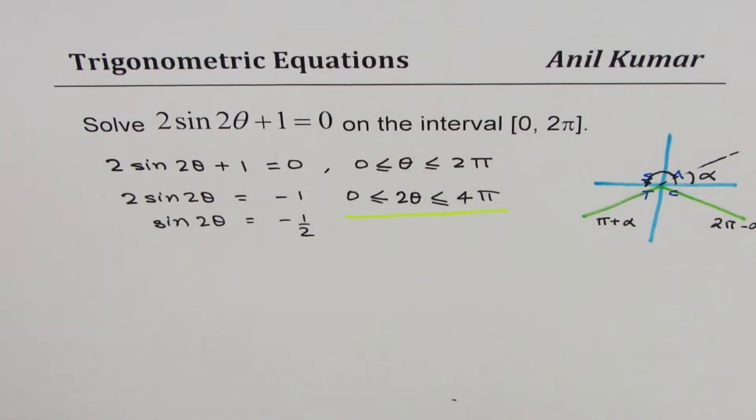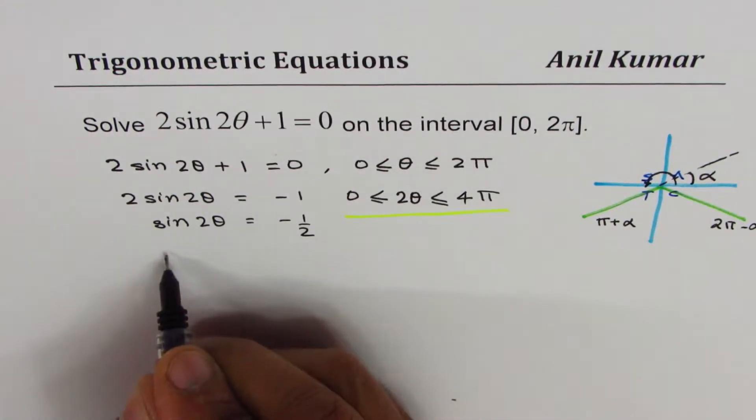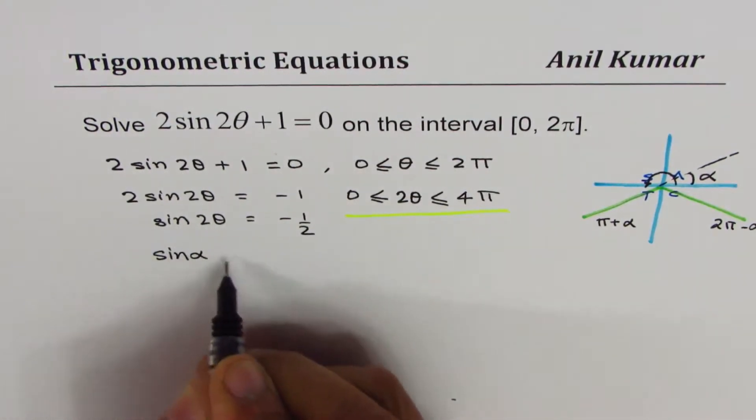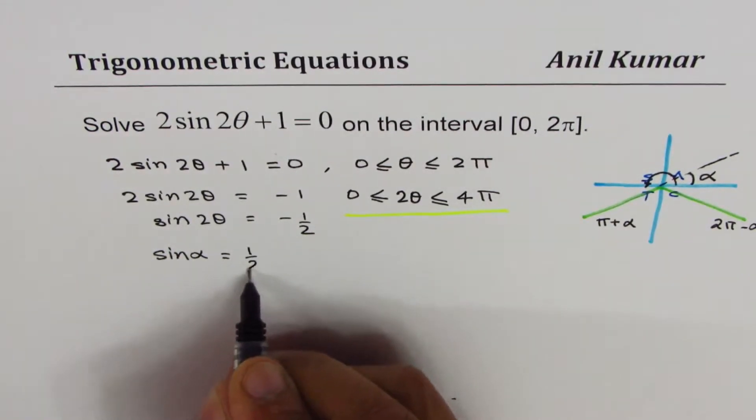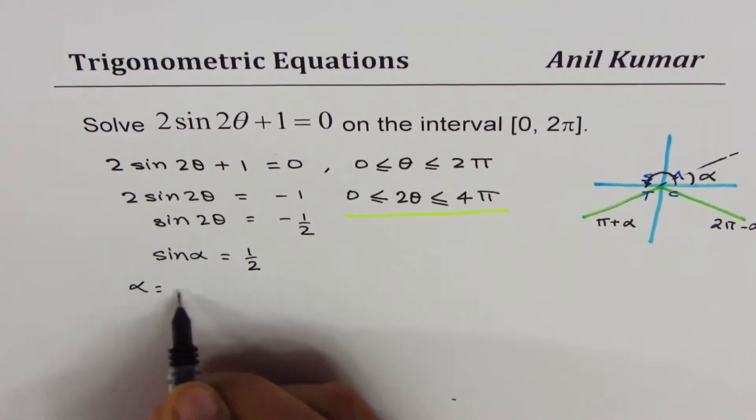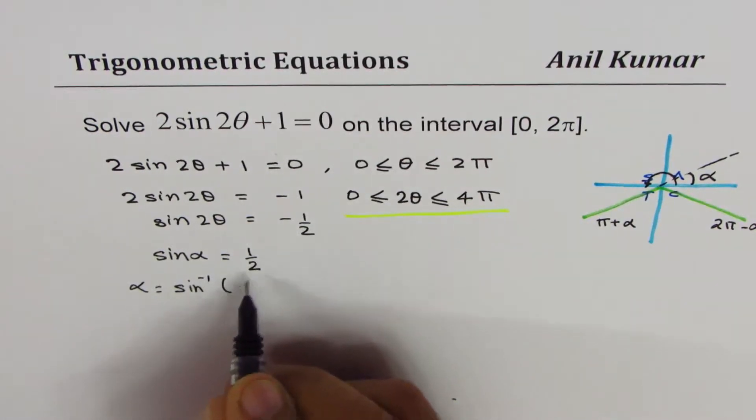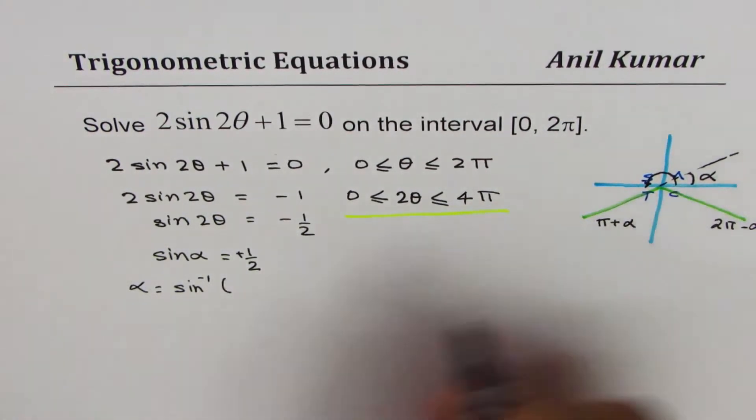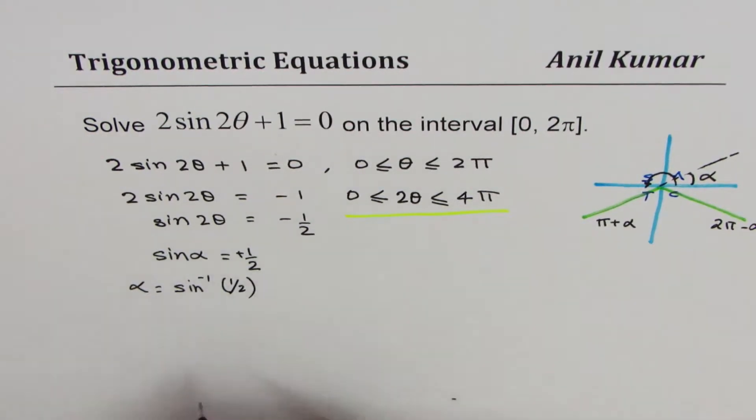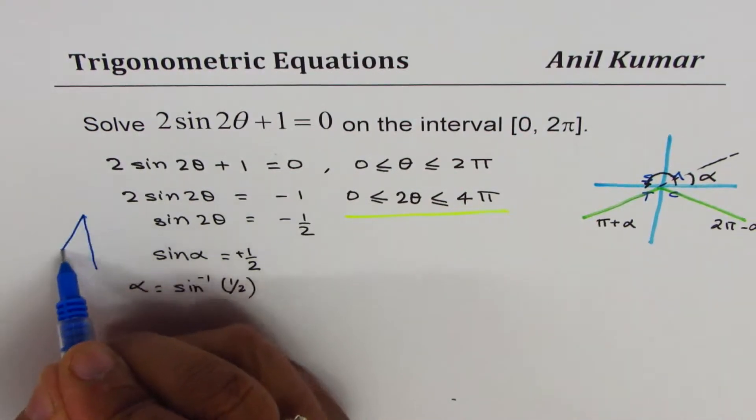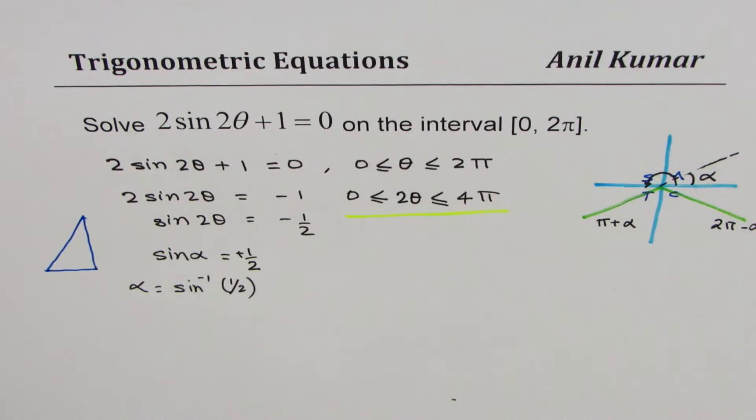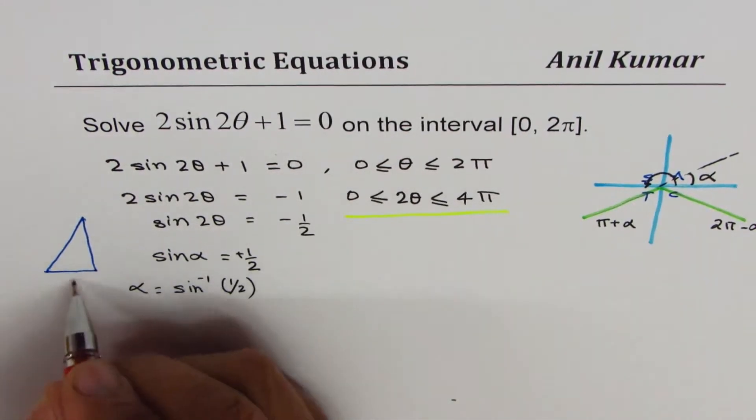Let me write this as sin α. This will always be positive, so sin α = 1/2. That means α = sin⁻¹(1/2). You could always use your calculator or special triangles. For 1/2 you could use special triangles. It's a good idea; many times calculator is not allowed.